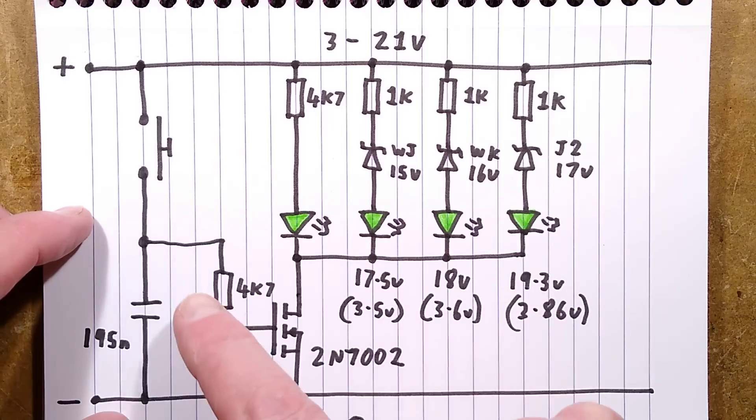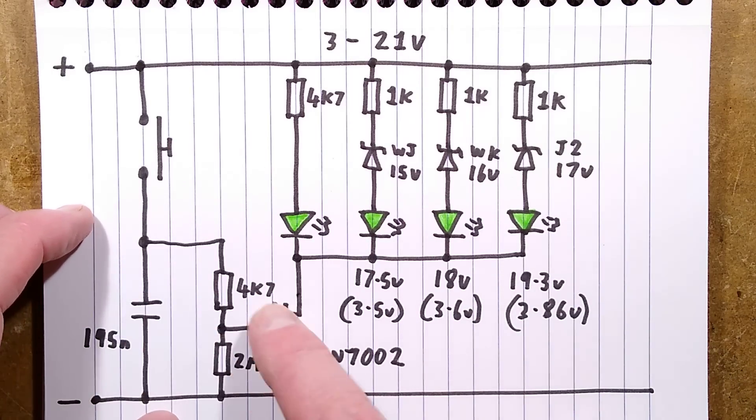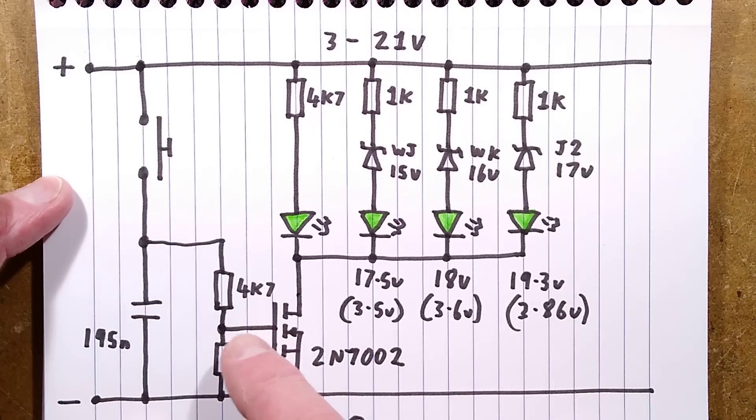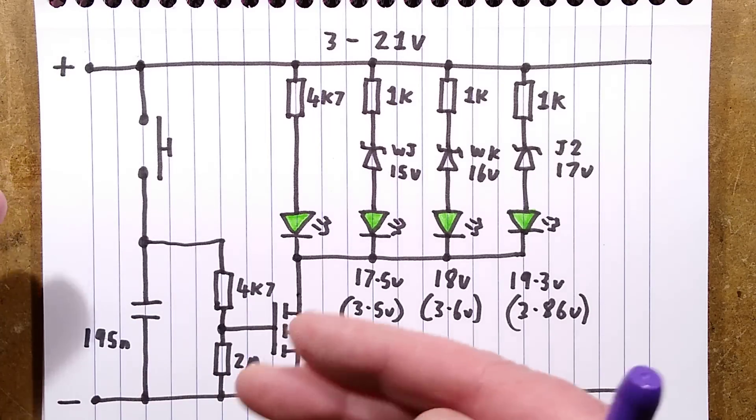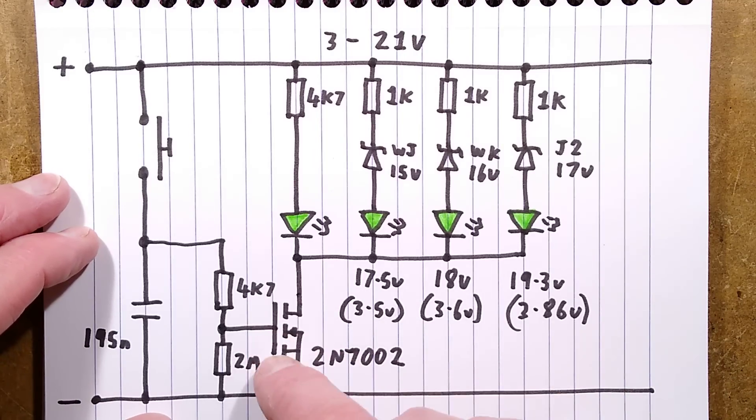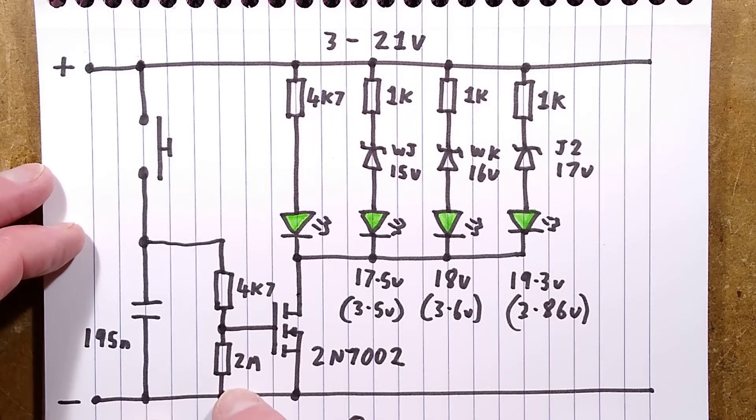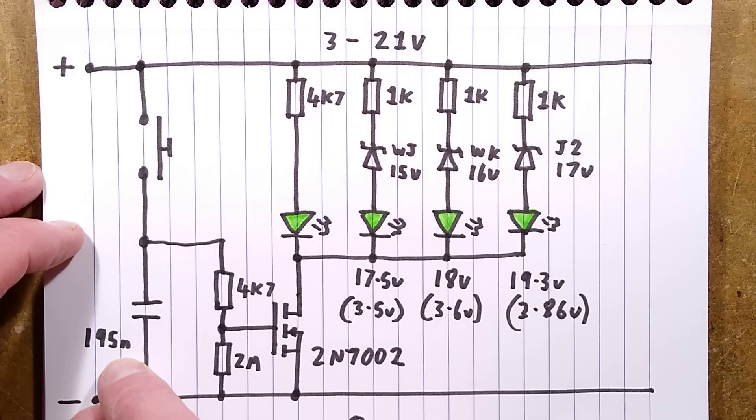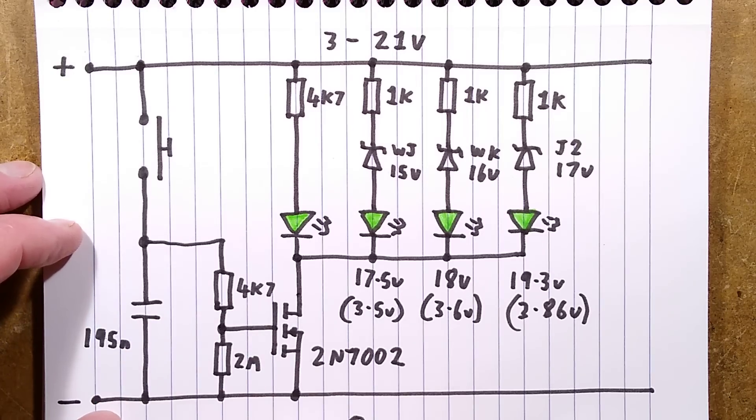When you push the button it charges up this capacitor. There's a MOSFET. I don't know why they've got this 4k7 resistor but they have. There's no current flow into the gate of the MOSFET. Maybe it's just to limit the initial peak, not sure, because there's a little capacitive effect on these MOSFETs with the way they work. But the main thing is a two megaohm pulldown resistor, and once that 195 nanofarad measured in circuit, perhaps 220 nanofarad with tolerance.